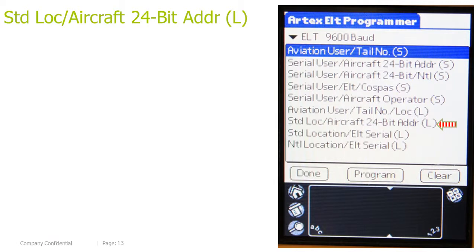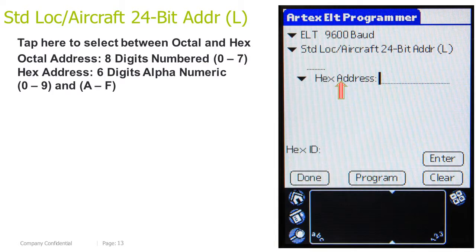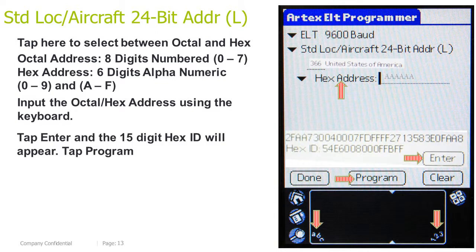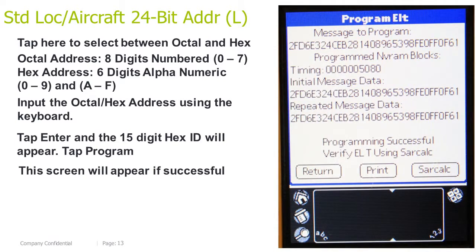Then location, aircraft 24-bit address long. Tap here to select between octal and HEX. Octal address is 8 digits numbered 0–7, and HEX address is 6 digits alphanumeric 0–9 and A–F. Input the octal/HEX address using the keyboard. Tap Enter and the 15-digit HEX ID will appear. Tap Program. This screen will appear if successful.